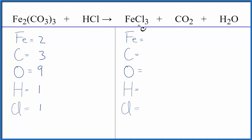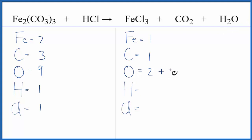On the product side, we have one iron. Carbons: we have one. Oxygens: we have two, plus there's an oxygen here in the water, so we have to count that — three. Two hydrogens, and three chlorines.